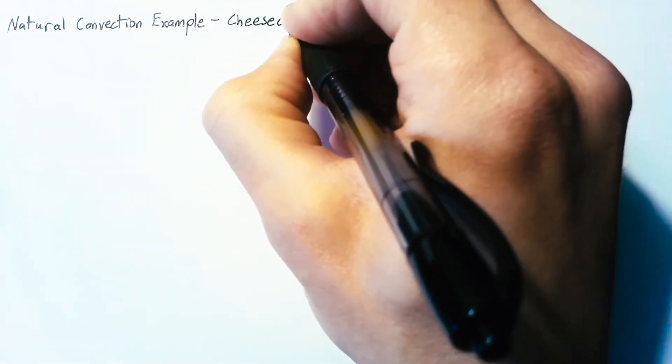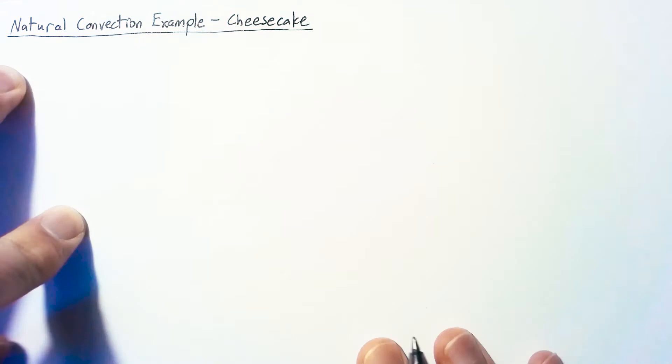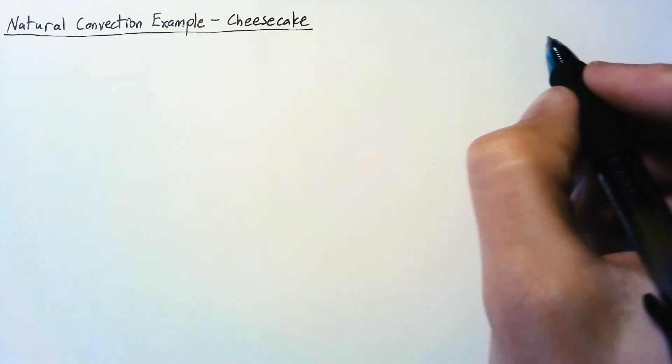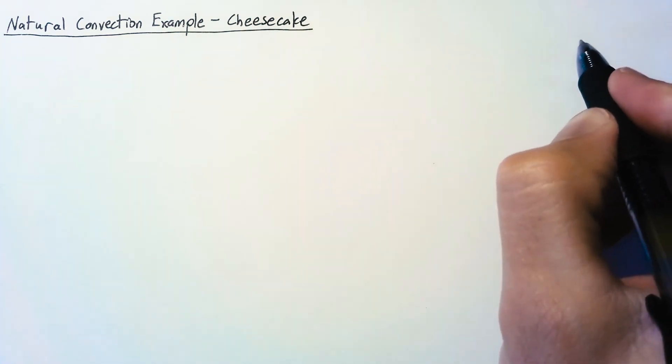In this video we're going to be using our natural convection equations in order to analyze the heat flow into a cheesecake right as we put it into an oven. So to start off, let's take a look at our geometry.